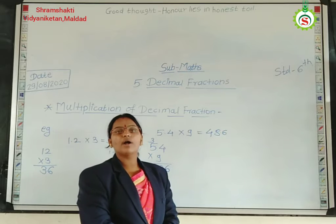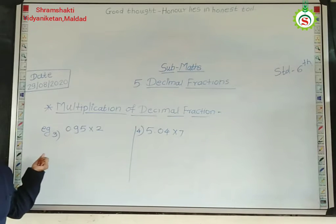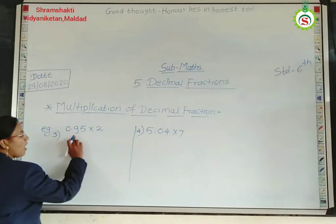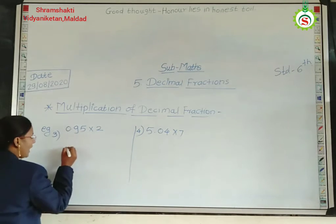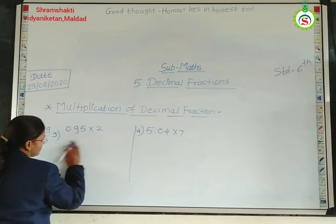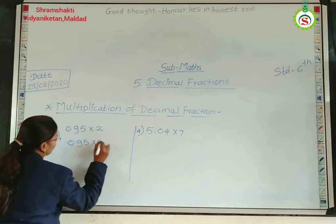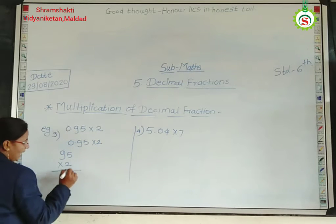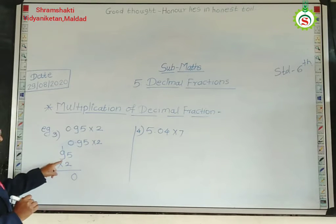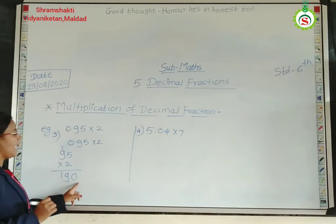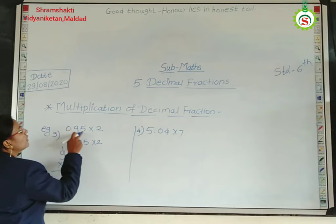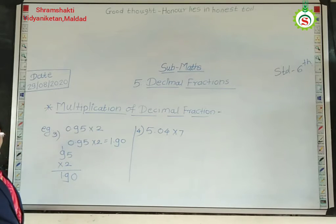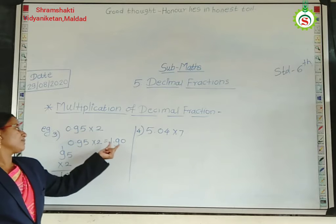Now you will see the multiplication of a decimal fraction with 2 decimal digits. Example: 0.95 into 2. First, ignore the point and write down 95 into 2. 2 fives are 10, carry 1. 9 twos are 18, 18 plus 1 is 19. So our answer is 190. How many digits after the point? 1 and 2 — so leave 2 places and place the point. Our answer is 1.90. 2 digits after the point, that's why we leave 2 places.